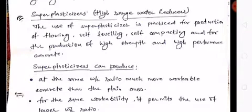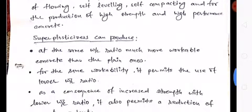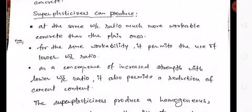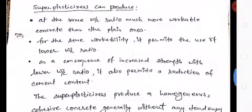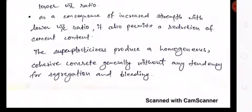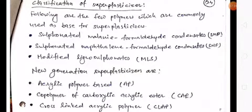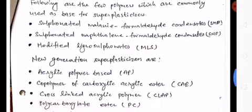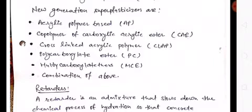Super plasticizers are used for production of flowing, self-leveling, self-compacting, and high-strength, high-performance concrete. At the same water-cement ratio, super plasticizers produce much more workable concrete. For the same workability, they permit use of a lower water-cement ratio, increasing strength, and also permit a reduction of cement content. Classification of super plasticizers: commonly used base polymers include sulfonated melamine formaldehyde condensates, sulfonated naphthalene formaldehyde condensates, modified lignosulfonates, and new-generation acrylic polymer-based co-polymers including polycarboxylate ethers.